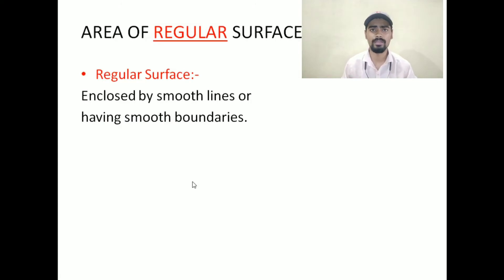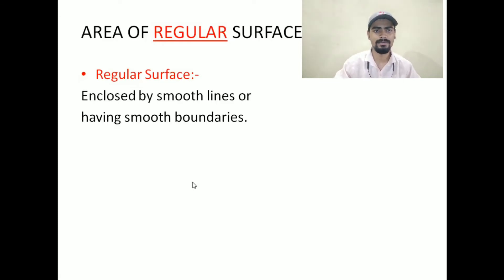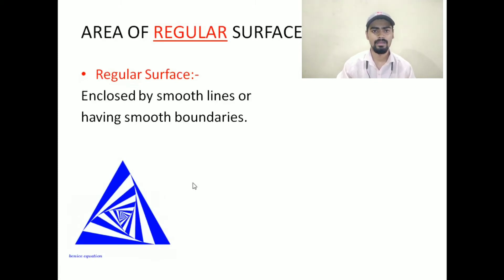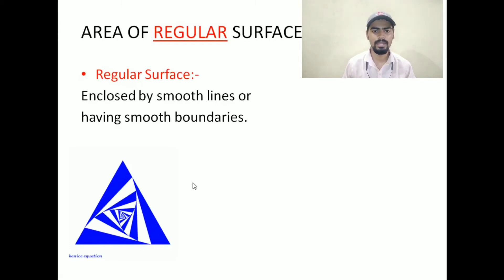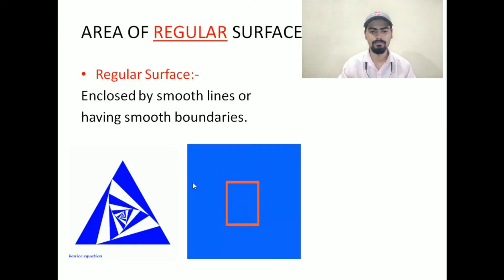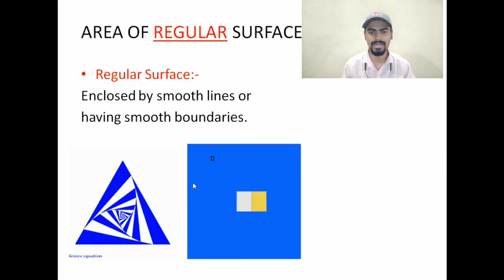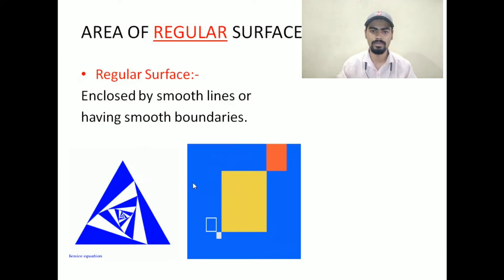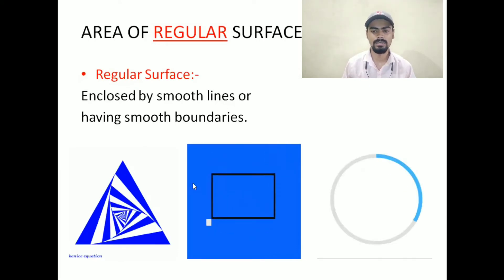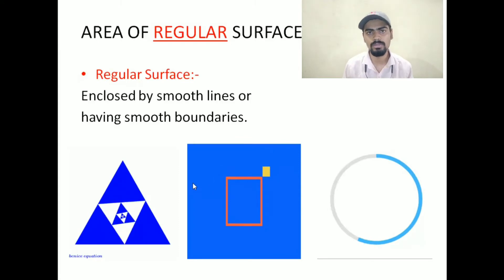That is the area of regular surfaces. What is a regular surface? Regular surface means surfaces or figures which are enclosed by smooth lines or having smooth boundaries. For example, say a triangle — look at its sides, they are very smooth and even. Look at this other figure, whether it is a square or a rectangle, it has smooth lines and smooth boundaries. And the third one, that is a circle — again, the circle has smooth boundaries.